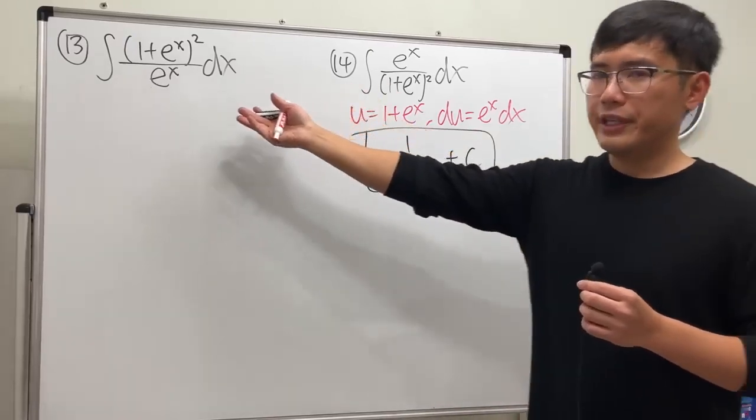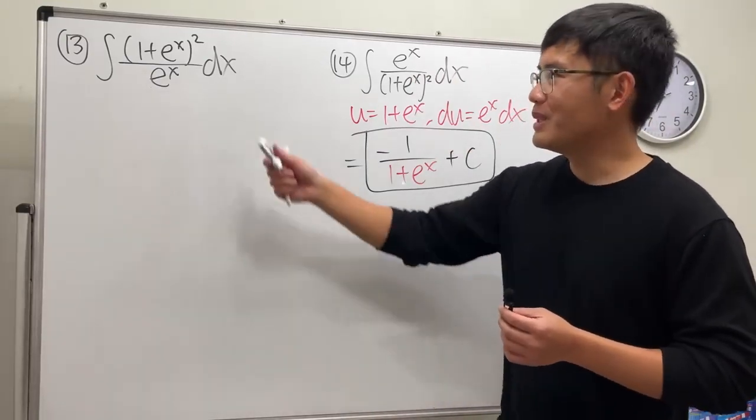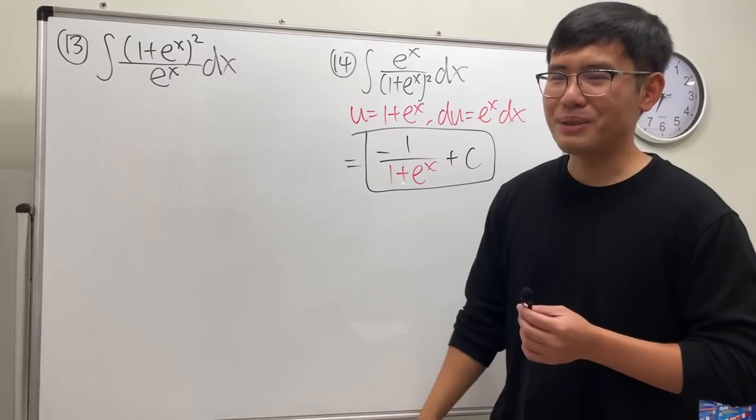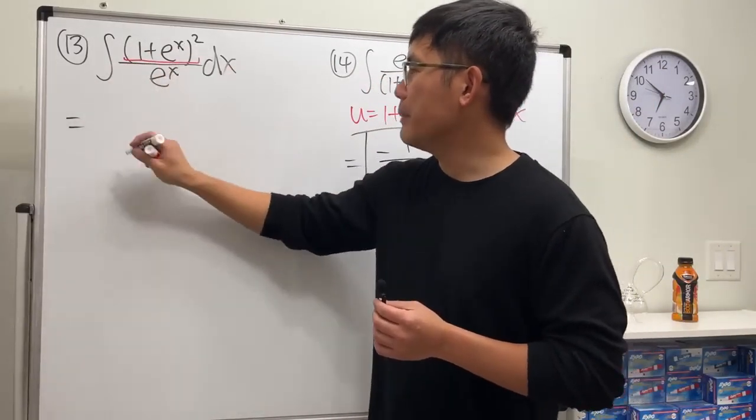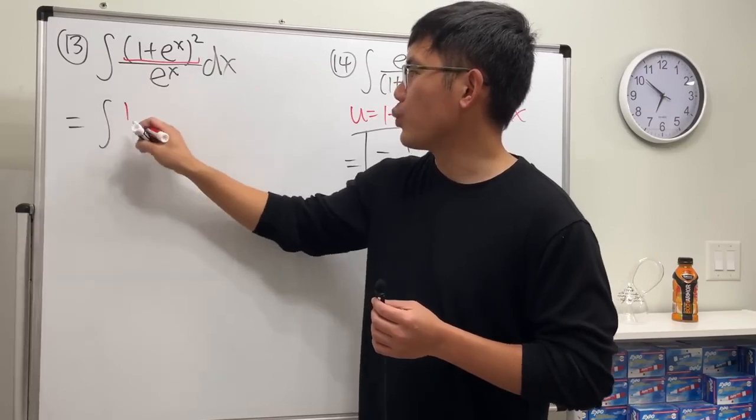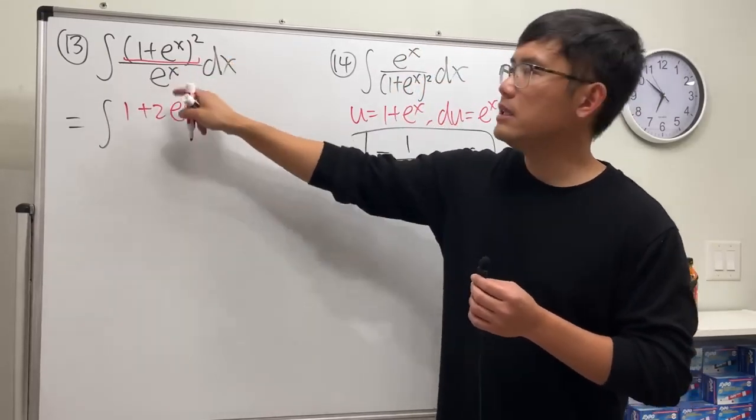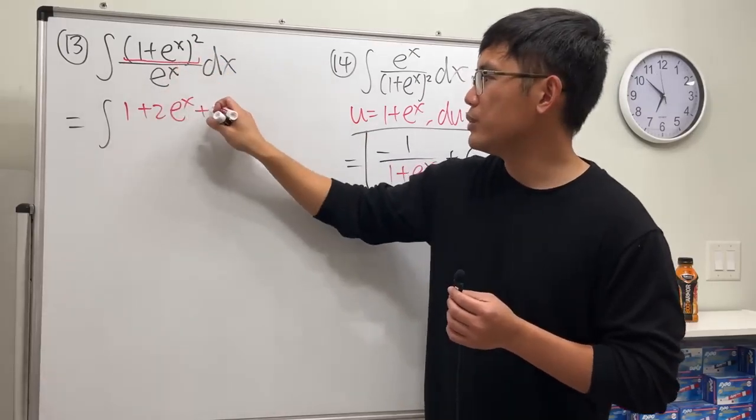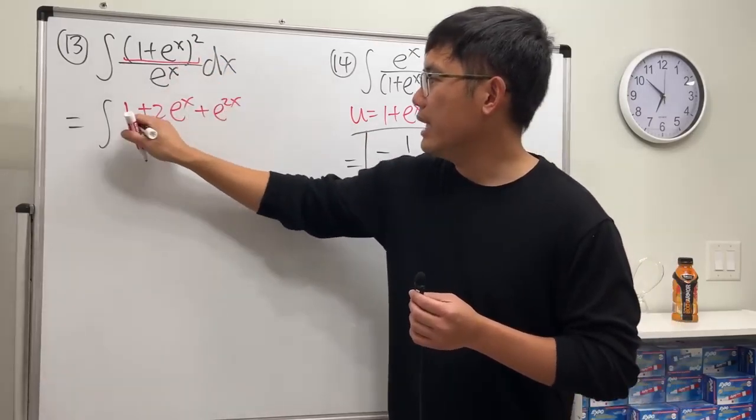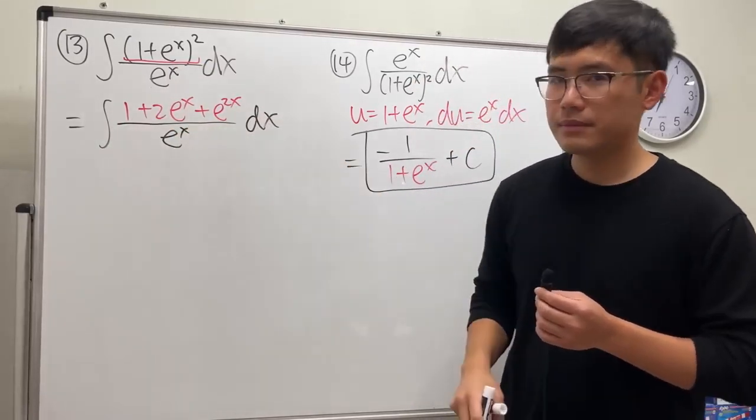For number 13, well, u-sub is not going to work right away. We have to expand this and just simplify it. It's not so bad either, check this out. Multiply out the top: we get this thing squared, which is 1 plus 2 times this and that, so e to the x, and then lastly square this, e to the x squared, we get e to the 2x, and then divide everybody by e to the x dx.